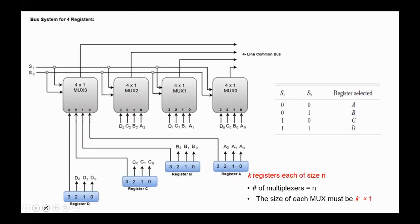Here we have a bus system for four registers: A, B, C, and D. Since the size of each register is four, we need four multiplexers. In general, if we have K registers each of size N, then the number of multiplexers equals N (the size of the register), and the size of each MUX must be K-by-1, where K is the number of registers.